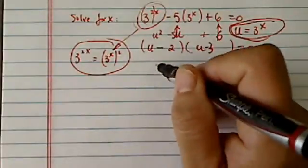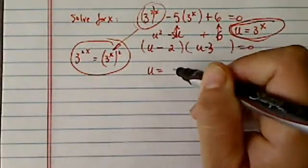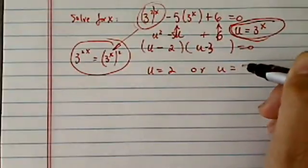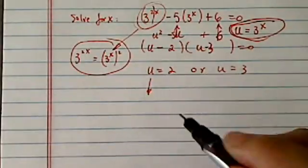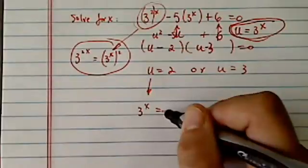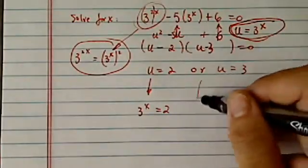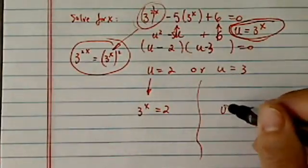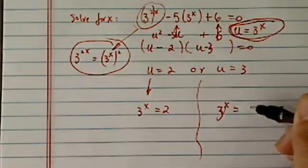From there, let's solve it. u equals 2 or u equals 3. Now substitute what u is: 3 to the x equals 2, or 3 to the x equals 3.